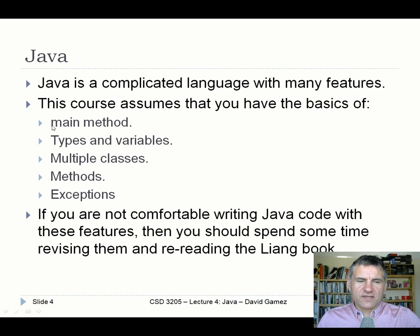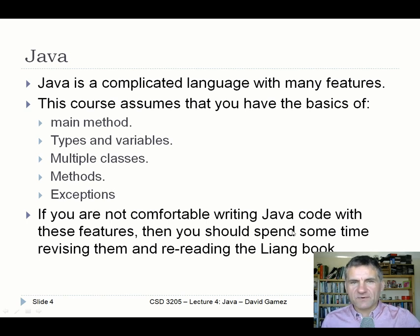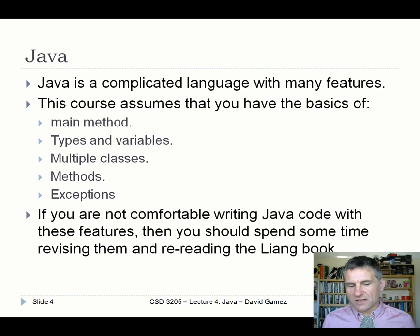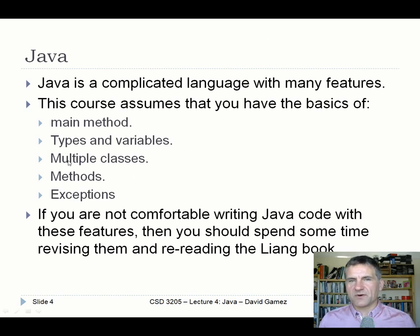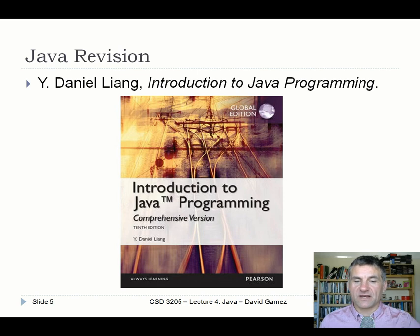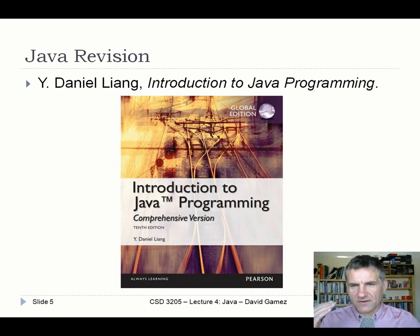This course assumes you've got the basics: writing a main method, types and variables, multiple classes, methods, and basic exception handling. If you're not comfortable writing Java code with these features, I recommend going back and doing some revision - reread bits of the Liang book, because I'm expecting you to be able to do that. This is the book that Carl used on his course last year. I think it's a pretty good Java book with lots of exercises, so if you're a little rusty, have a look at it.